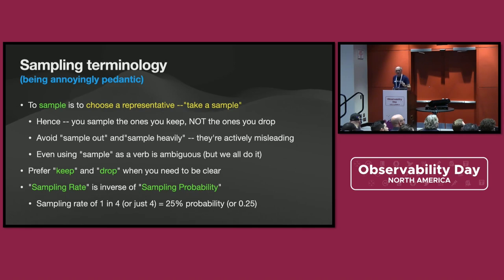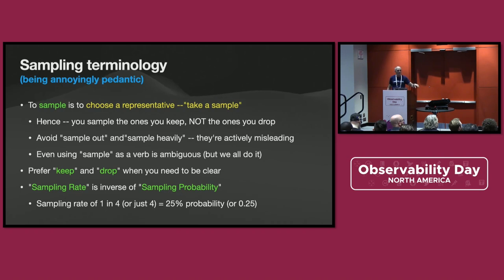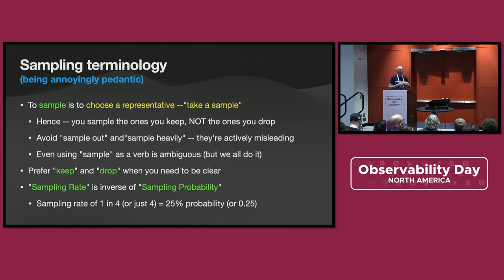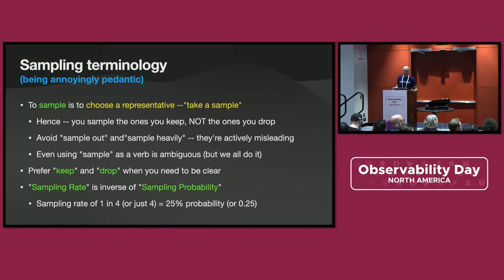One thing I want to address when I talk about sampling is to be slightly pedantic about it. To sample means to choose a sample — so you keep the sample. People often say, 'I'm sampling out these things' or 'I'm sampling heavily,' meaning they take many fewer of them. I try to avoid those terms because they're confusing. I really prefer to use the words 'keep' and 'drop' when you need to be clear.